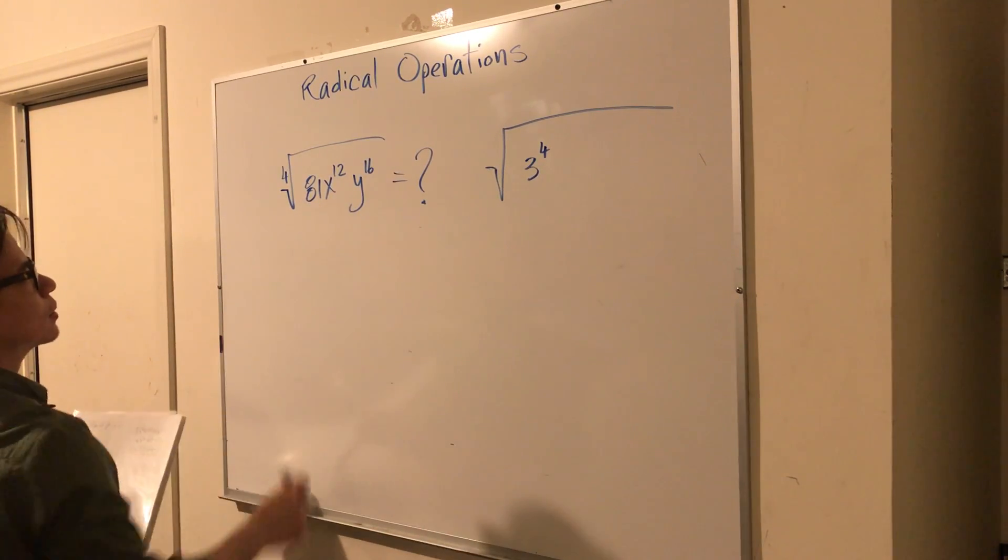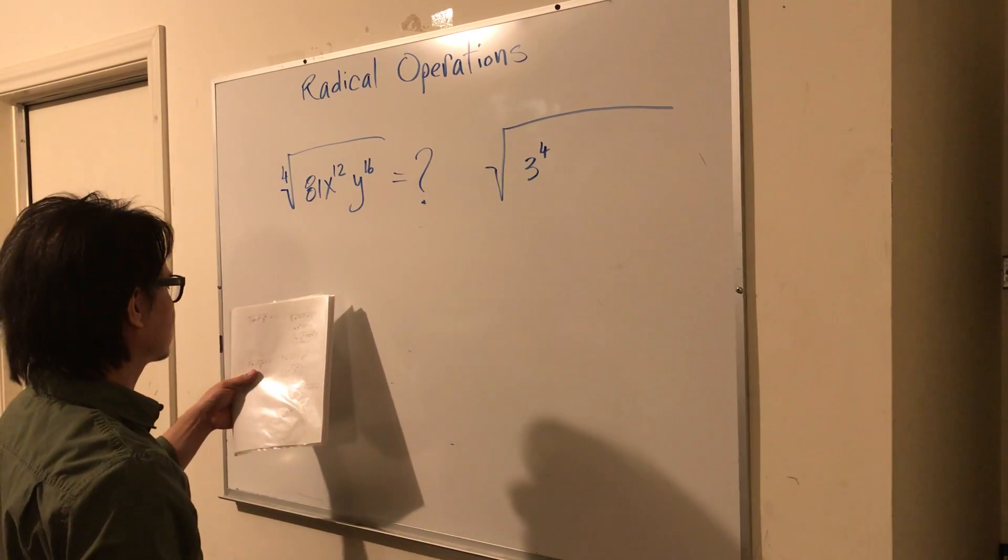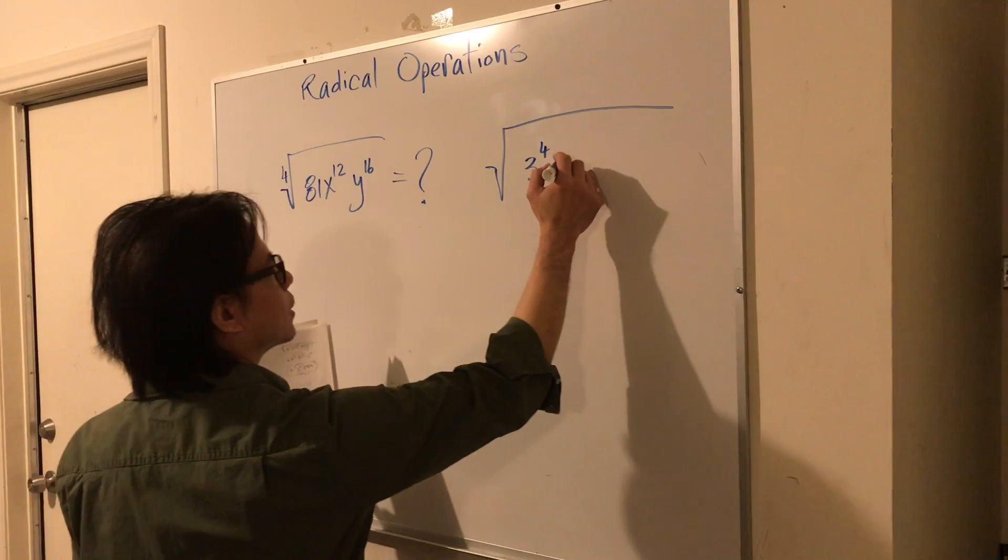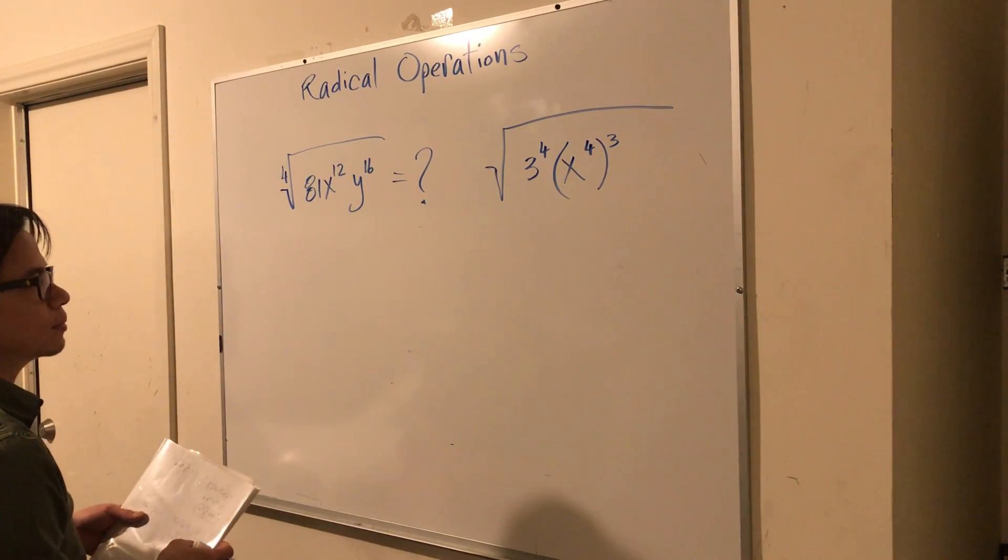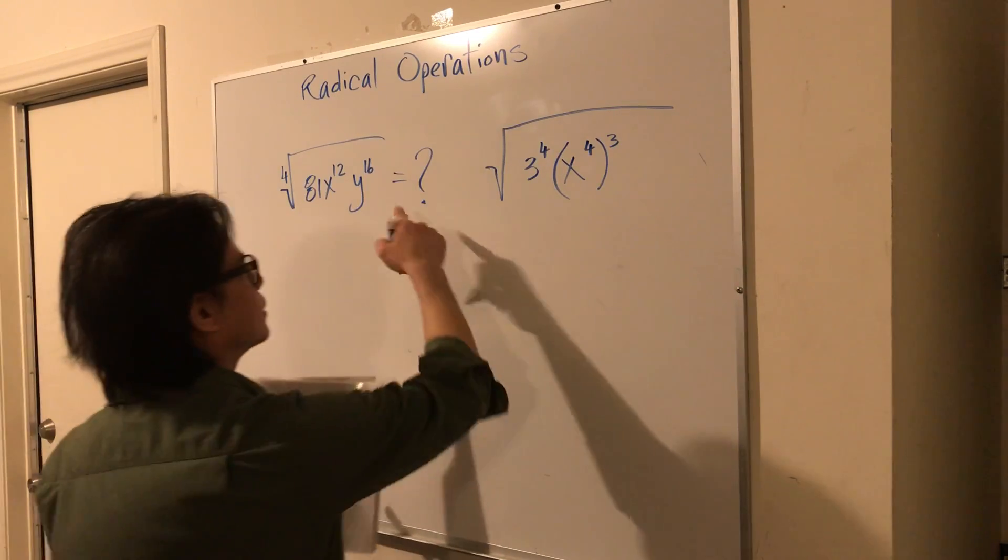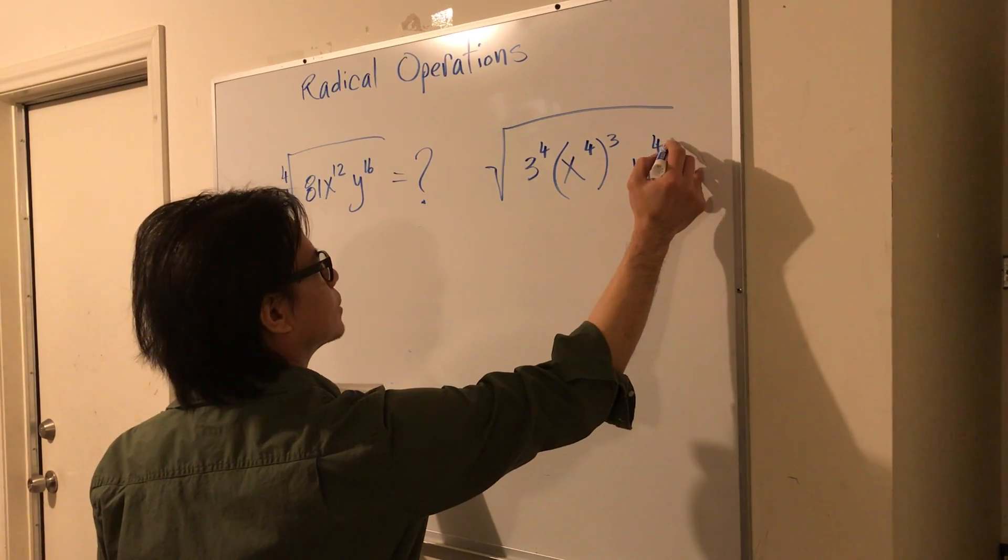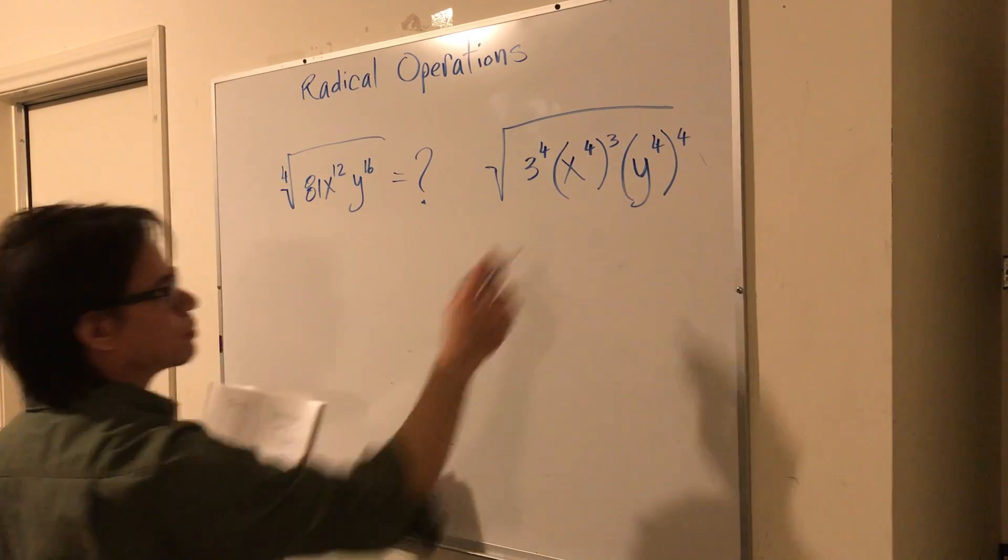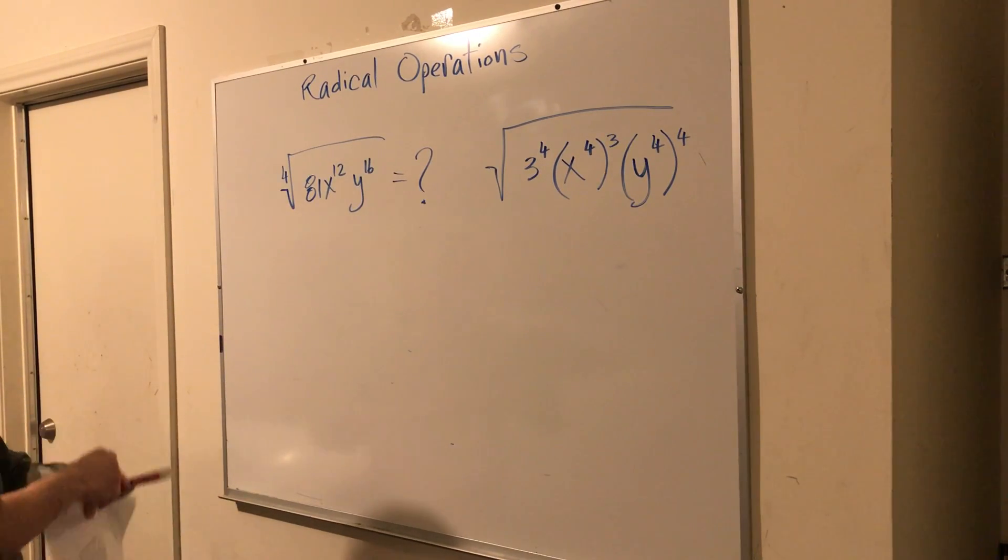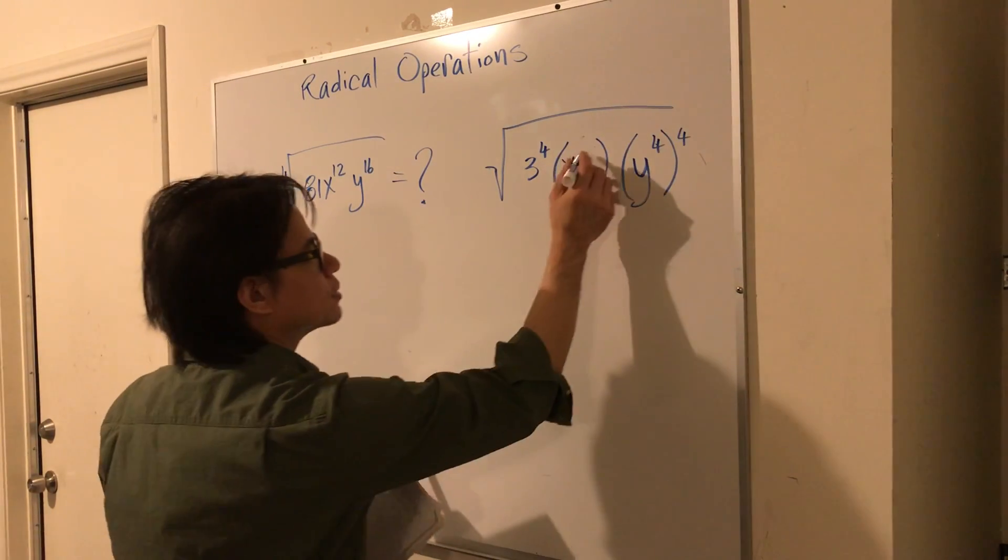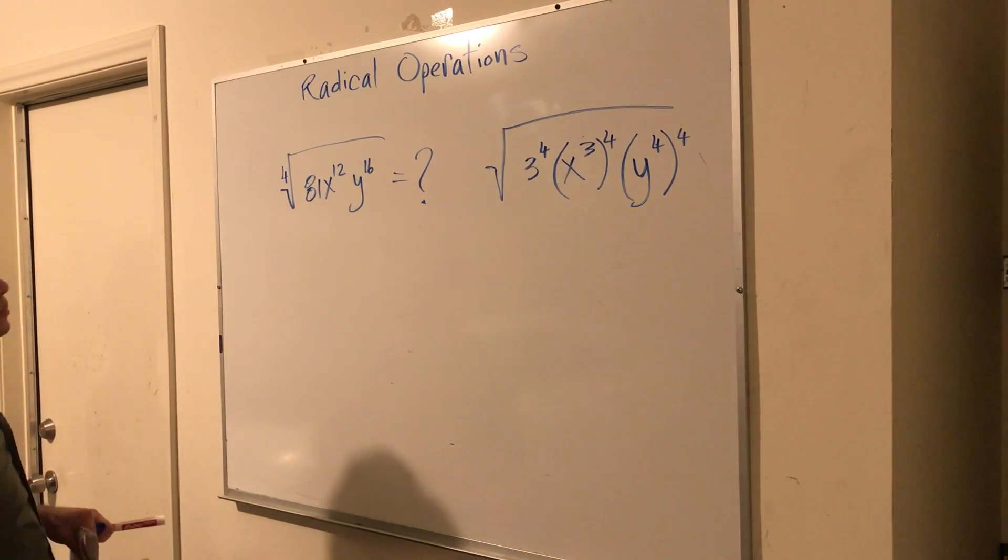Now let's deal with the x. You can think of this as x to the 4th power times to the 3rd, like that. And then the last term you can think of it as y to the 4th power times 4, to the 4th power. So I got this switched around, my bad, so this would be x to the 3rd power to the 4th. Either way you're going to get 12.